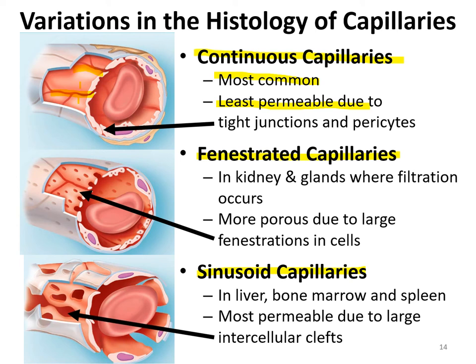Fenestrated capillaries are found in the kidneys and in glands, where we need to filter the blood. They are a little bit more porous due to actual fenestrations — or holes — that permeate the cells. As blood is forced through these capillaries, substances enter those fenestrations and exit the blood. They are particularly effective in getting rid of waste products in our kidneys.